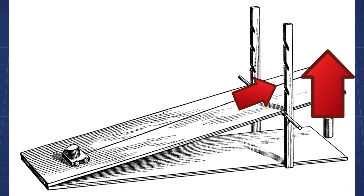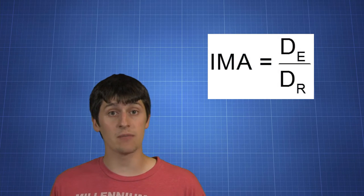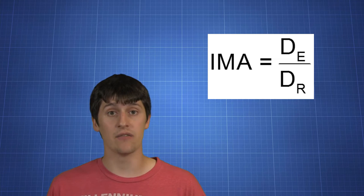The mechanical advantage of an incline plane depends on how long the ramp is. If I want a mechanical advantage of four to one, then I need to make a ramp that's four times longer than the height at the end of the ramp.